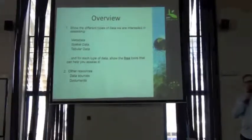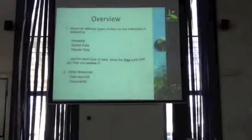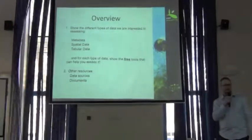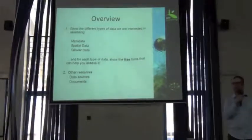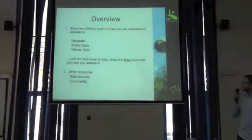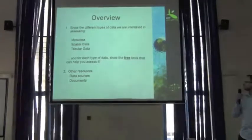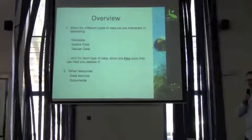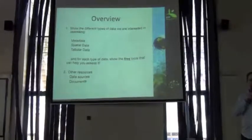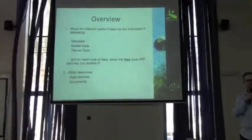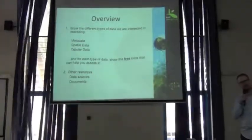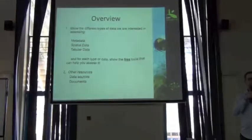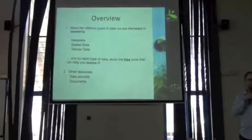The tools are organized into three different types of data. First, metadata — data about your data. Second, spatial data. Third, tabular. For each type of data, I will give you a description of what that type is about, and then give you a list of tools that you can use to assess that type of data.